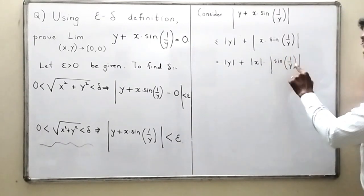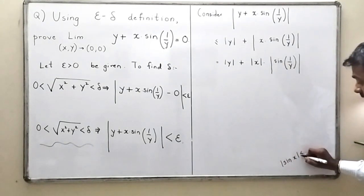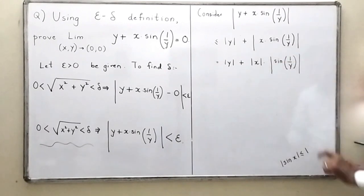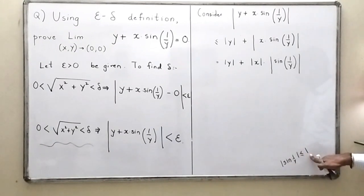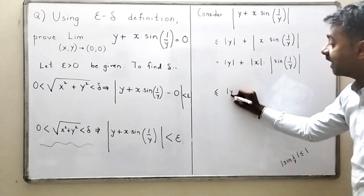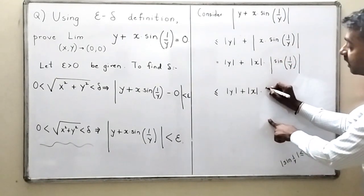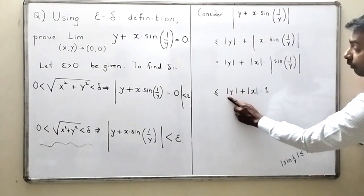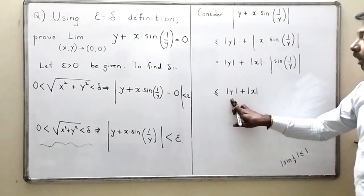From the preliminaries, |sin(anything)| ≤ 1. So |sin(1/y)| ≤ 1. Therefore |y| + |x|·|sin(1/y)| ≤ |y| + |x|·1 = |y| + |x|. I have now reached |y| + |x| and I need to proceed further.